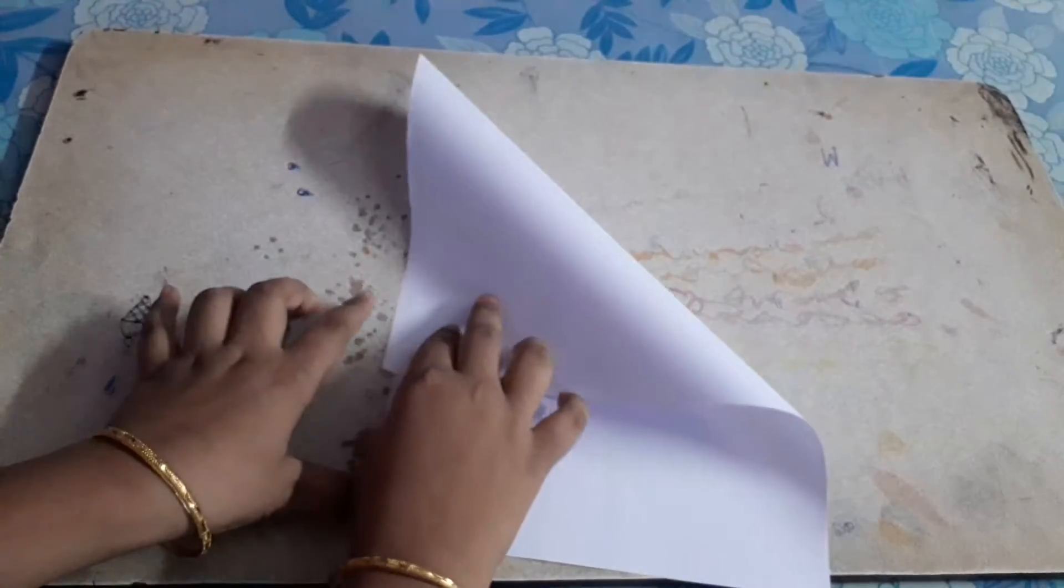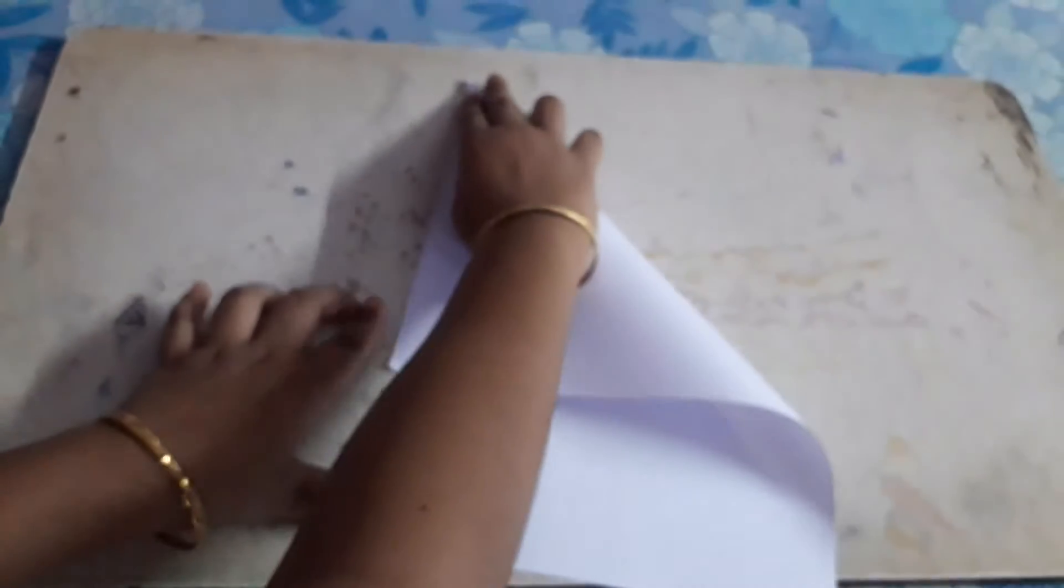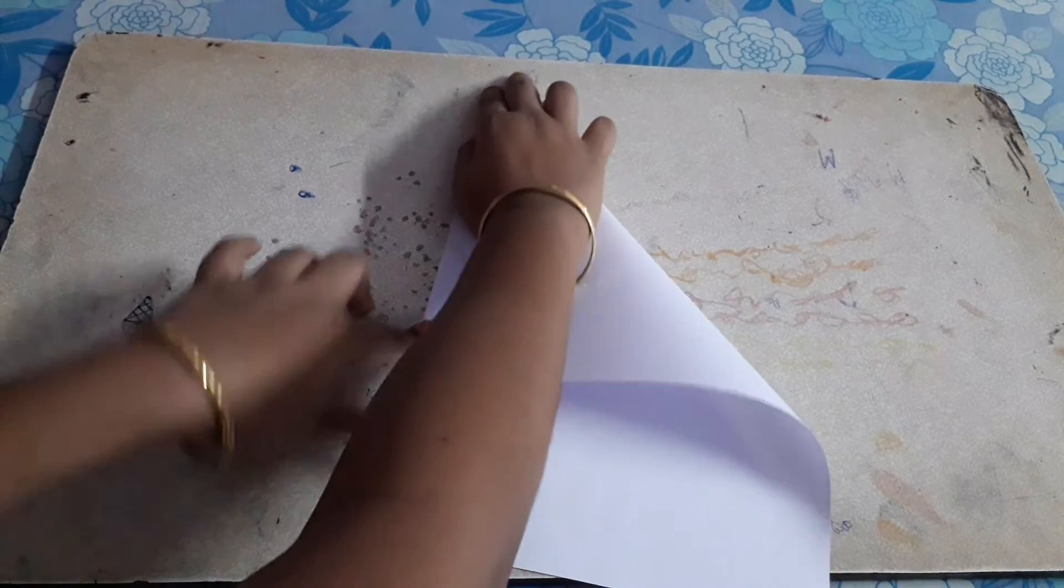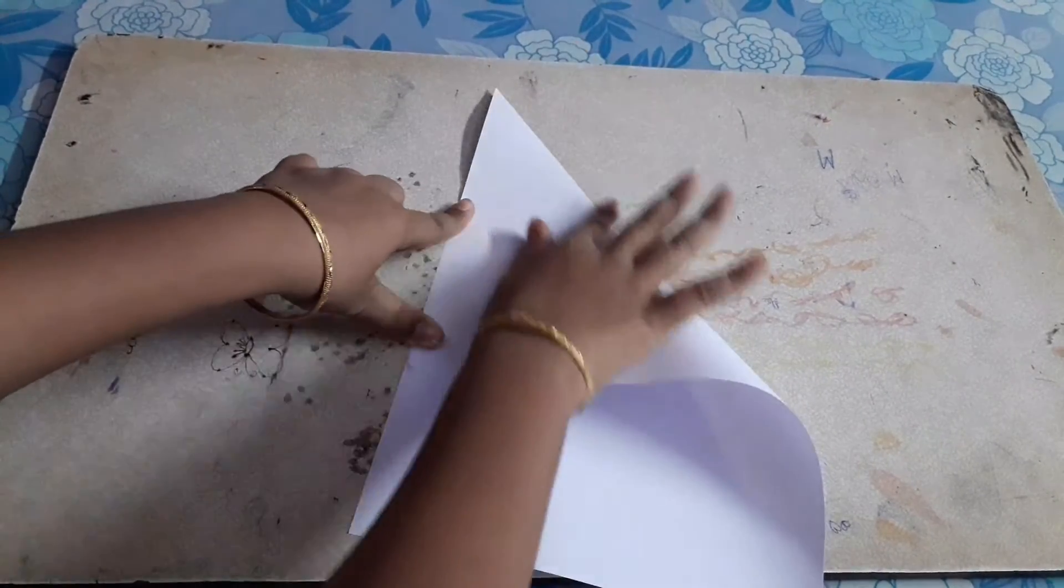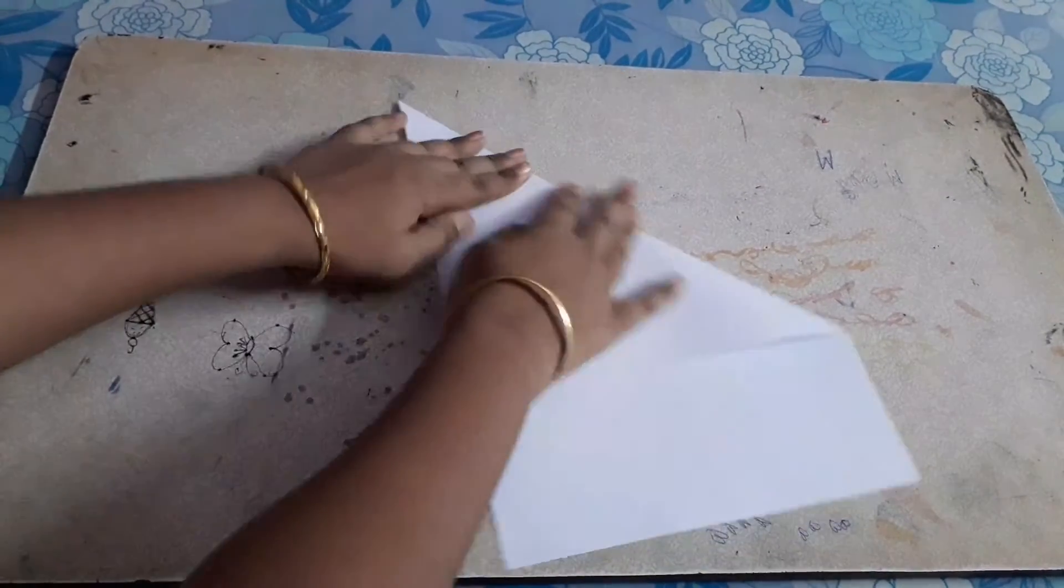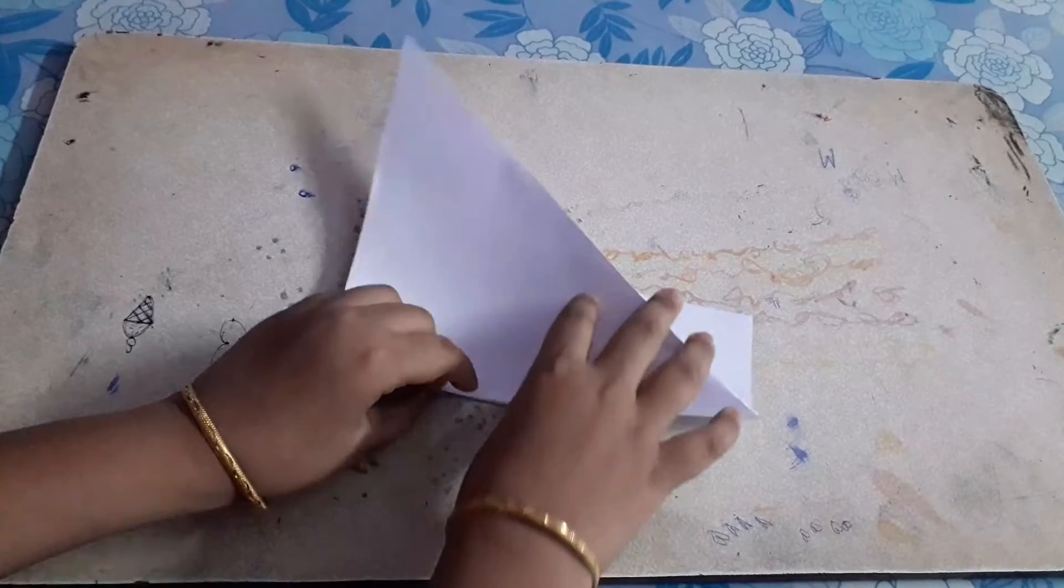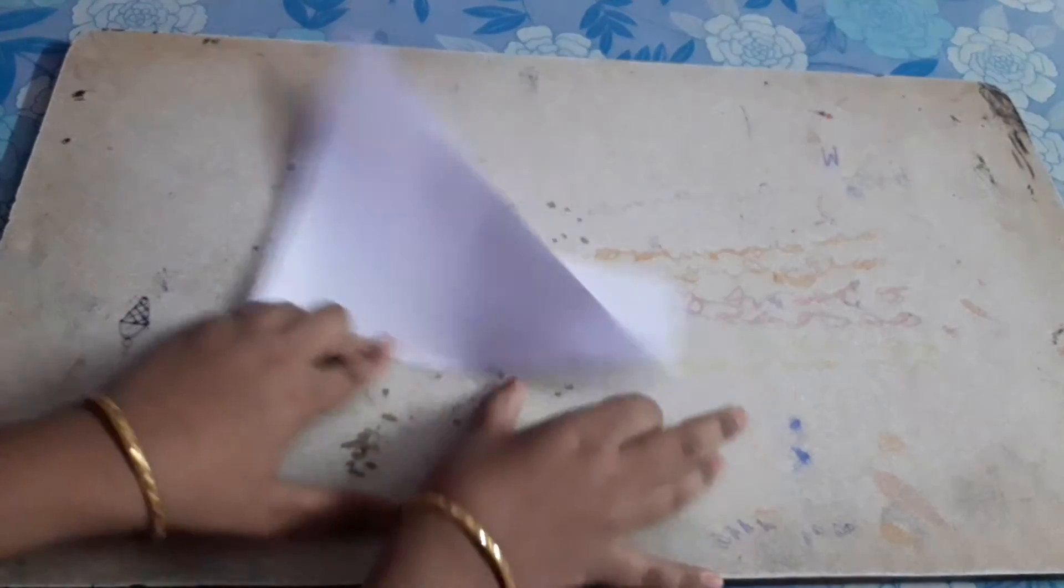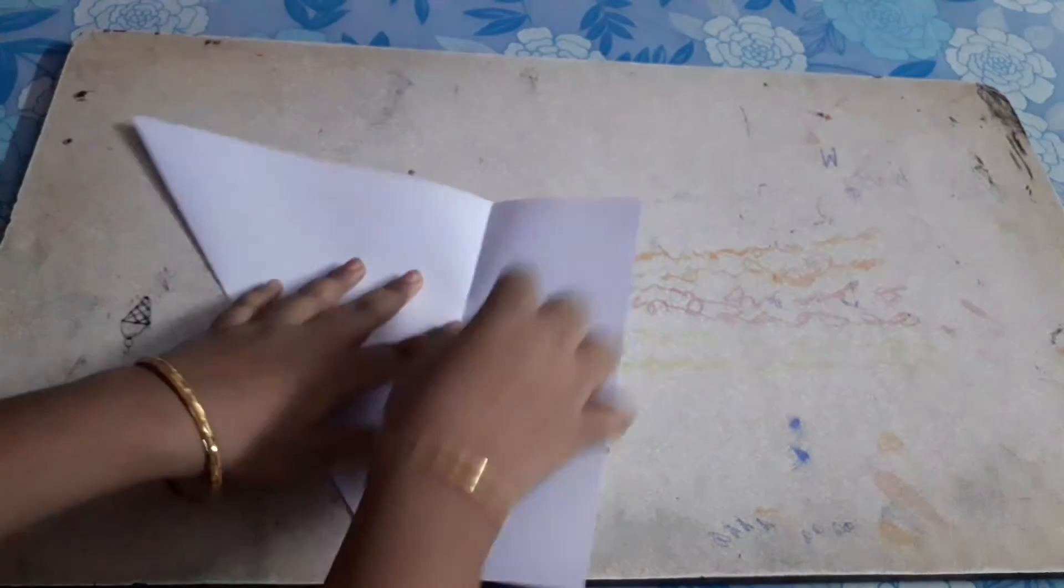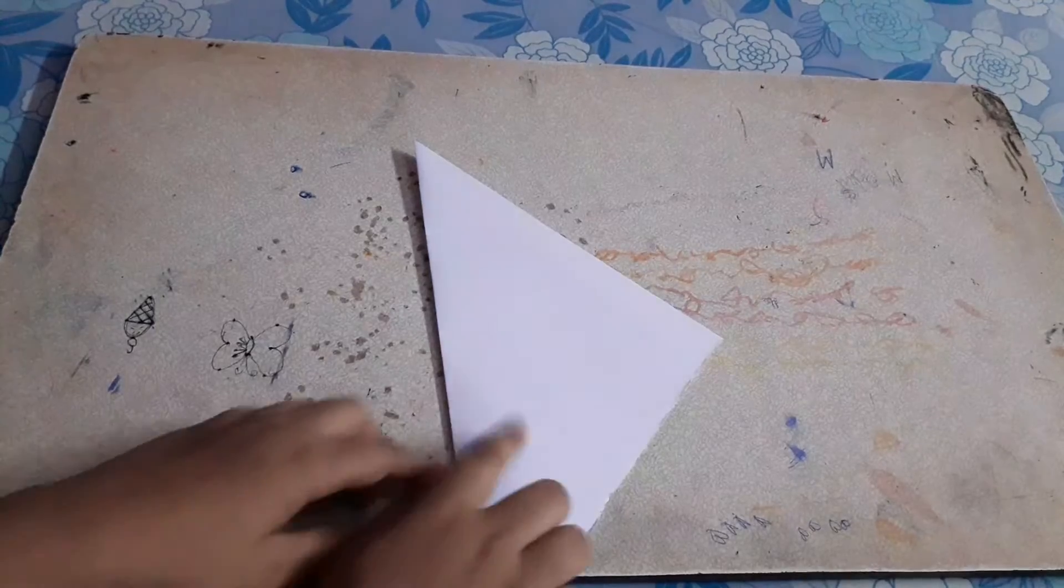this edge and fold it to this corner, and again turn this like this. At this point where it ends, we have to put it like this and unfold it. And you have to cut this part so it is